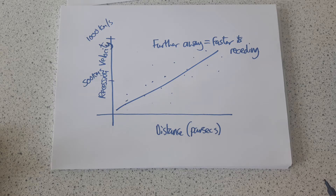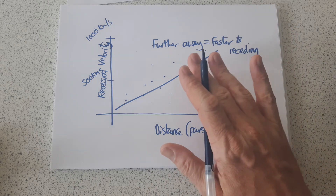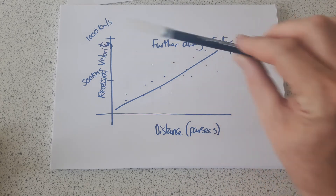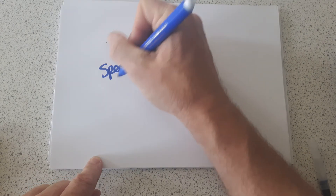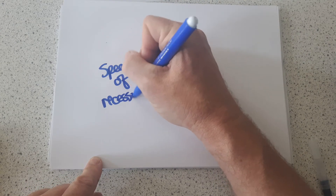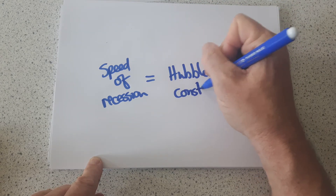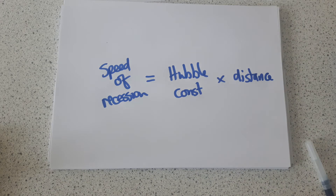If everything is moving away from everything else, the universe must be expanding. This led on to the idea of the Big Bang theory, because if the universe is expanding now and you rewind time, then everything comes back together in one place. So Hubble's law is that there is a relationship between the recession velocity and the distance, and that is enshrined in an equation: the speed of recession equals the Hubble constant times the distance that the star is away.